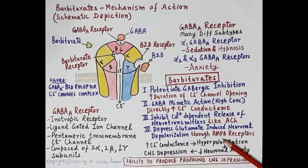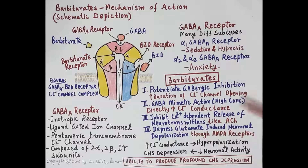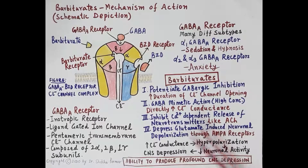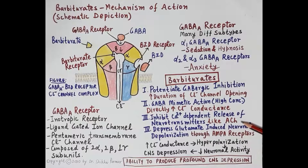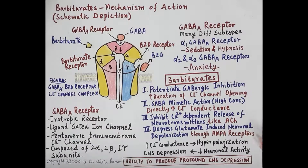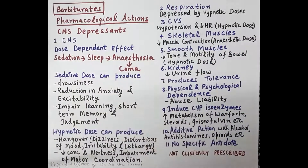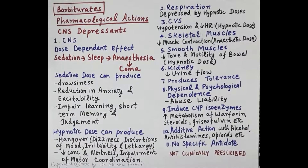Barbiturates depress glutamate-induced neuronal depolarization mediated through AMPA receptors. By virtue of these four mechanisms, barbiturates induce CNS depression: low doses produce sedation, slightly higher doses produce hypnosis, still higher doses produce anesthetic effect, and very high doses can result in coma. This is the basis for their dose-dependent pharmacological actions.